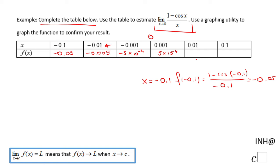Now, for 0.01, I end up with 0.005. And for positive 0.1, I end up with 0.049.